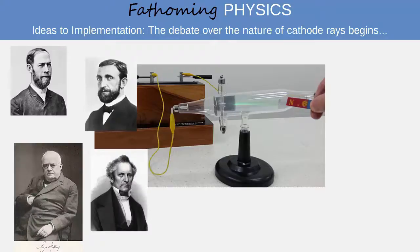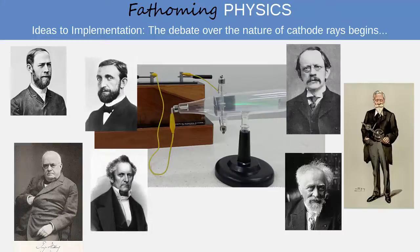On one side were German physicists who argued that the rays must be some kind of light, or disturbance in the ether, and on the other side were English and French physicists who argued the rays were a type of charged particle.